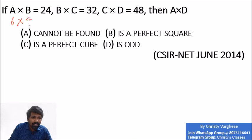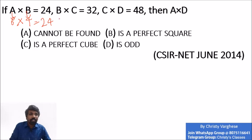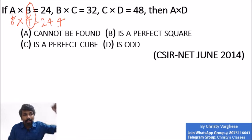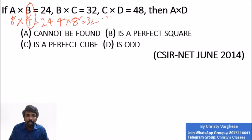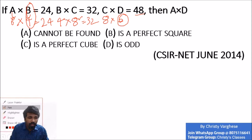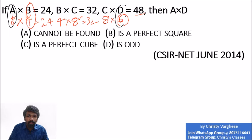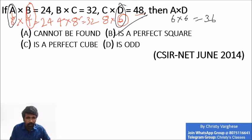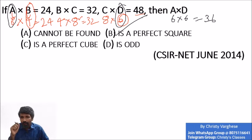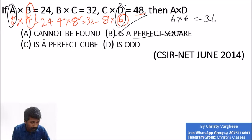Take A = 6, B = 4 (since 6 × 4 = 24, and it is easy to work with). Substitute B = 4 into the next equation: 4 × ? = 32 → answer is 8. Then 8 × ? = 48 → answer is 6, so D = 6. The question asks for A × D = 6 × 6 = 36, which is a perfect square. From the answer options, the question is asking for the property of the number — which is a perfect square, easily derived by taking the example.